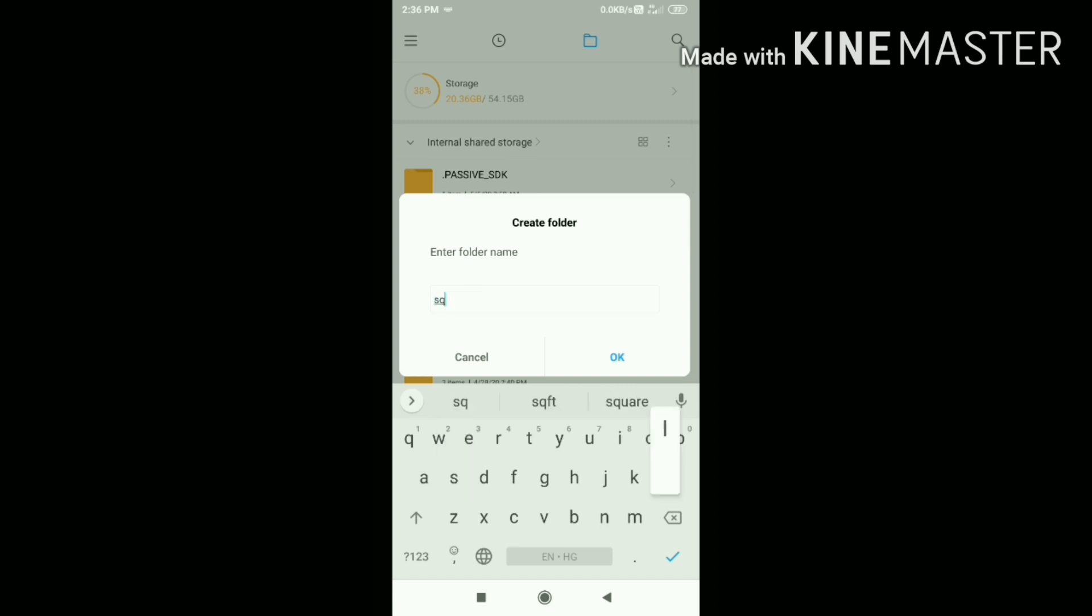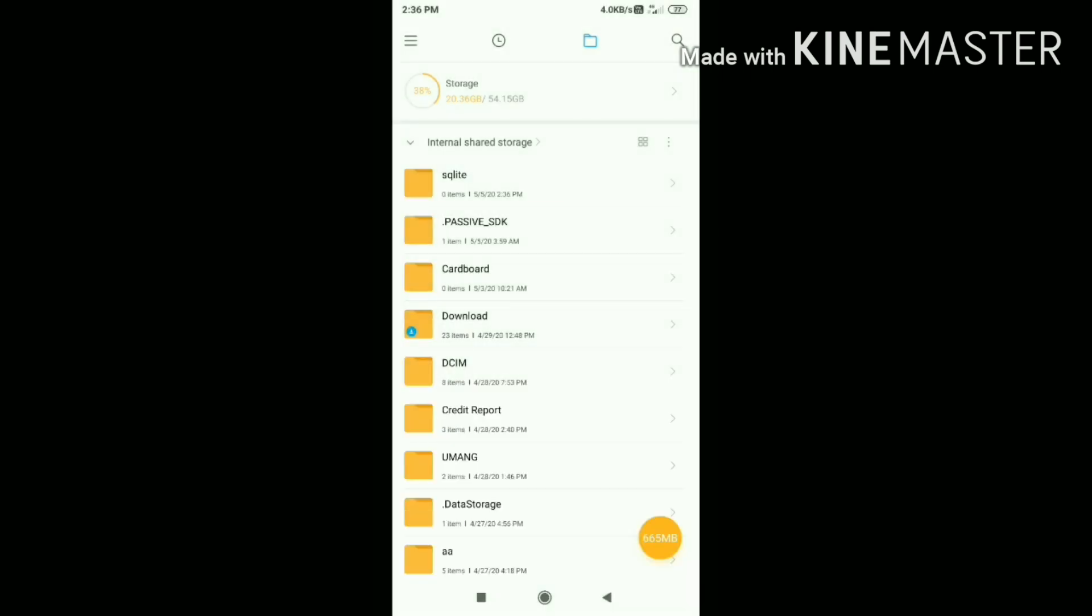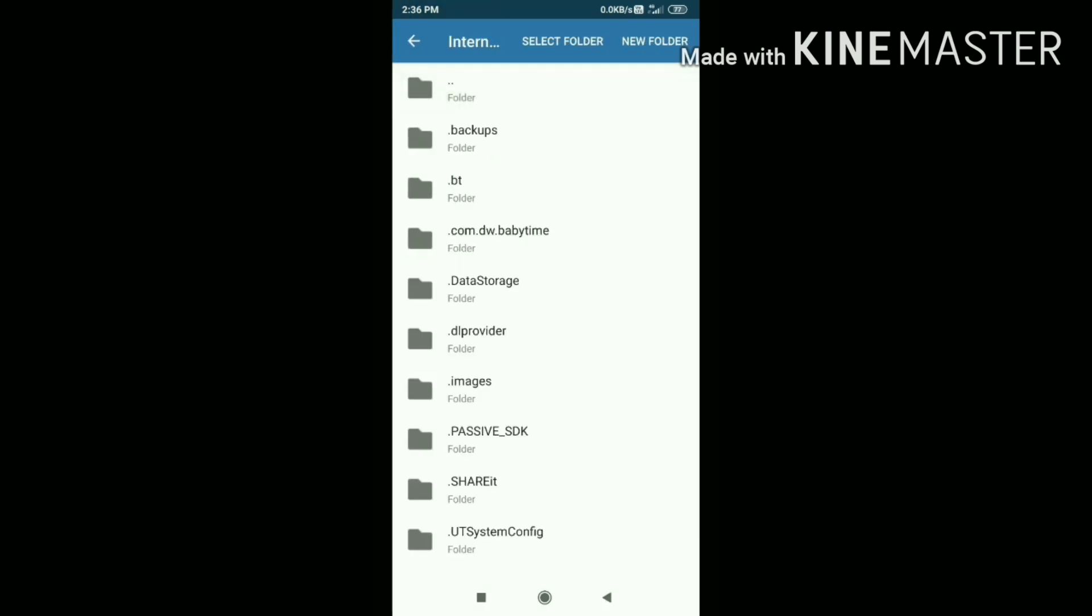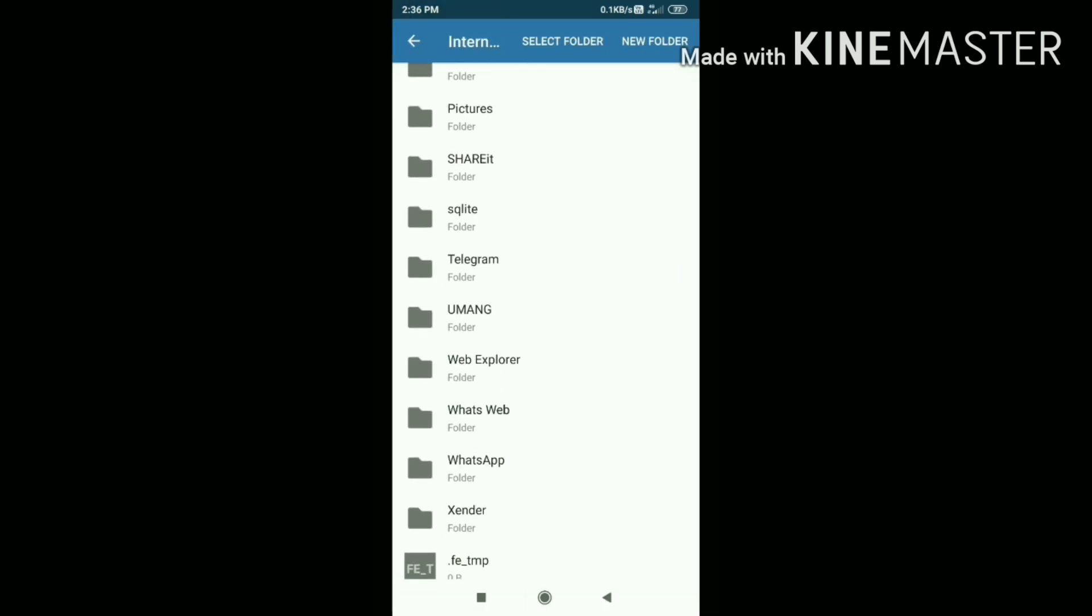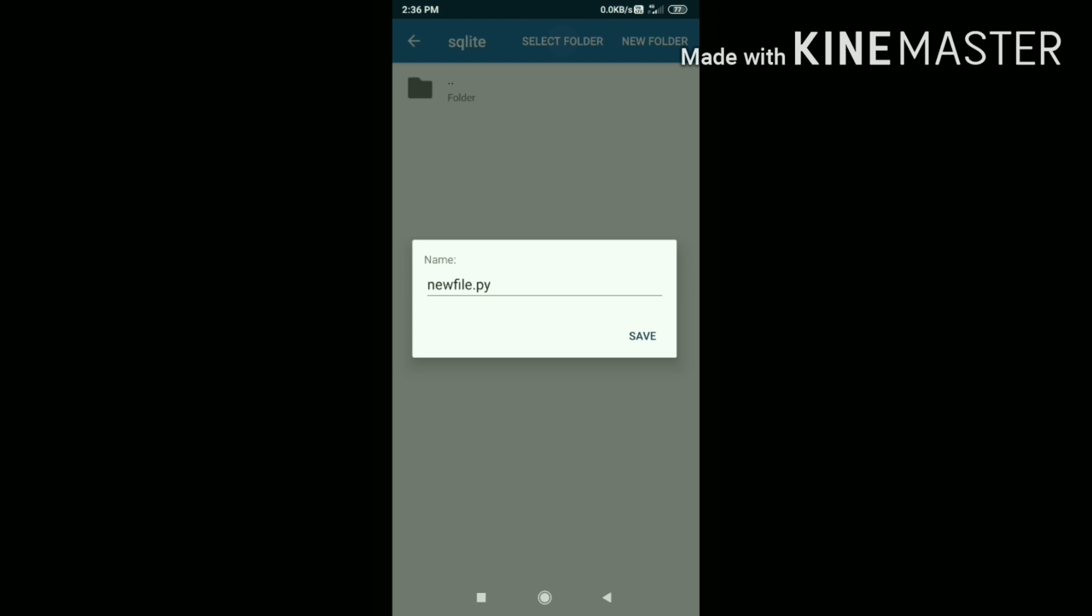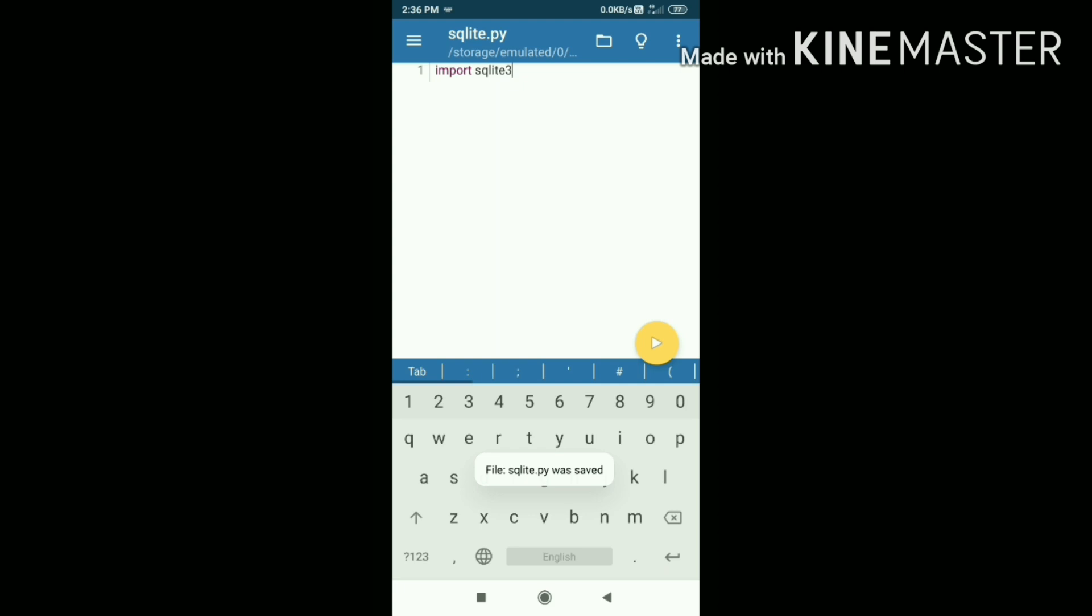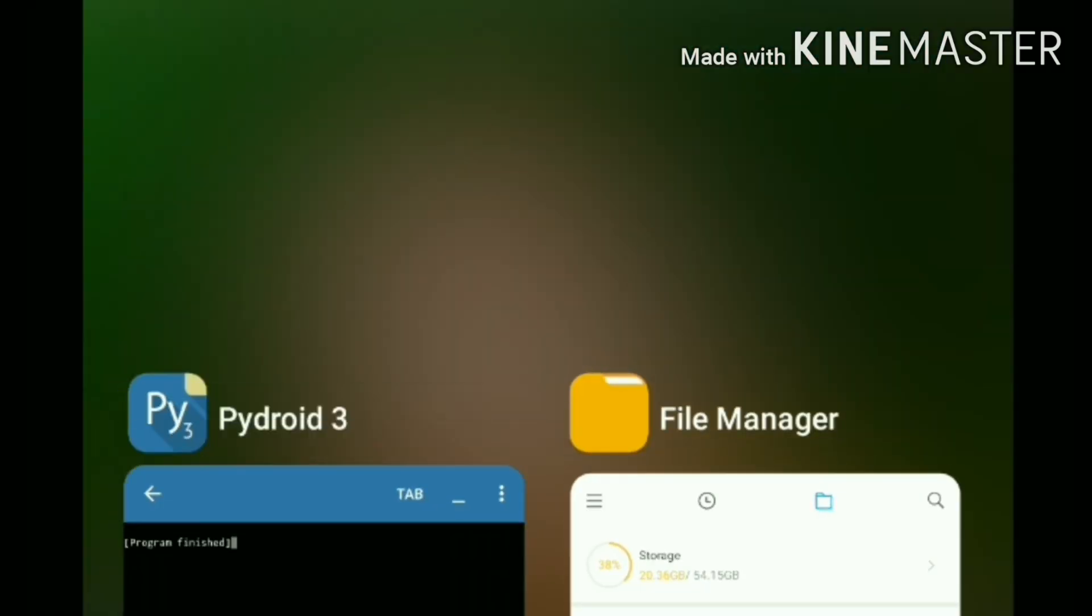First, I'm creating a folder called SQLite. Now I'm going to save this file inside that folder. Let's save it as sqlite.py, and then I'm going to run it.